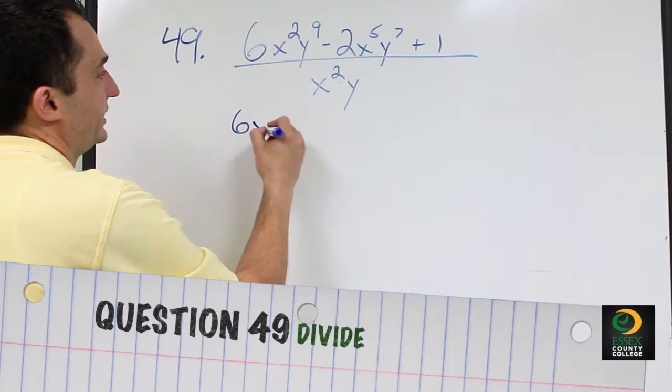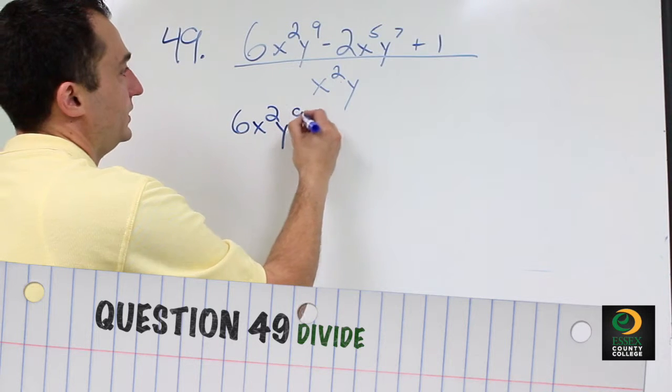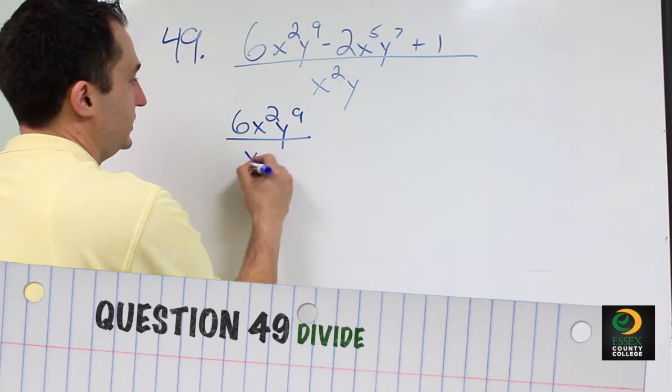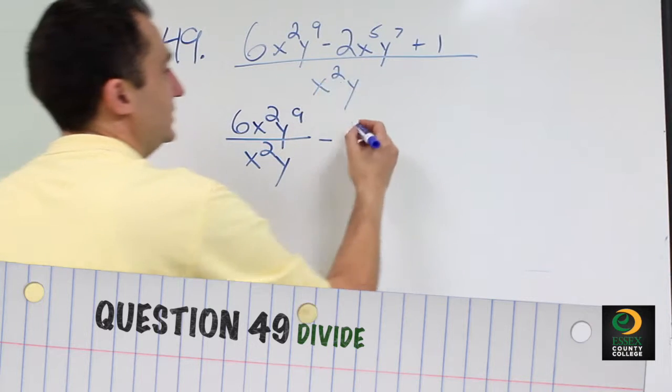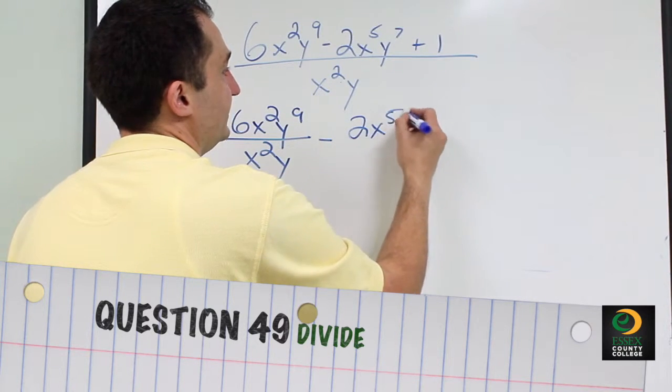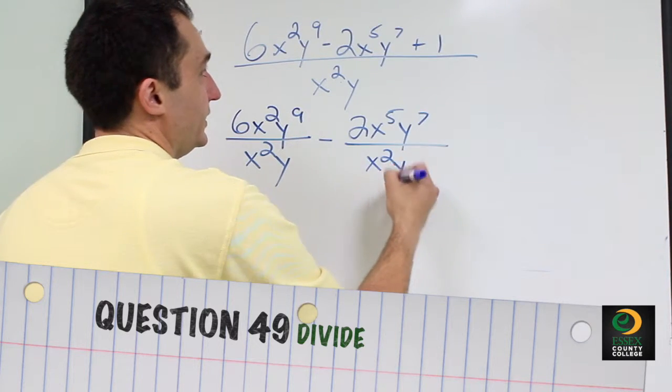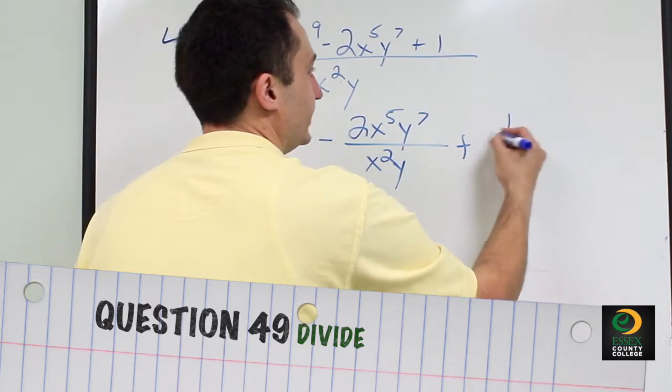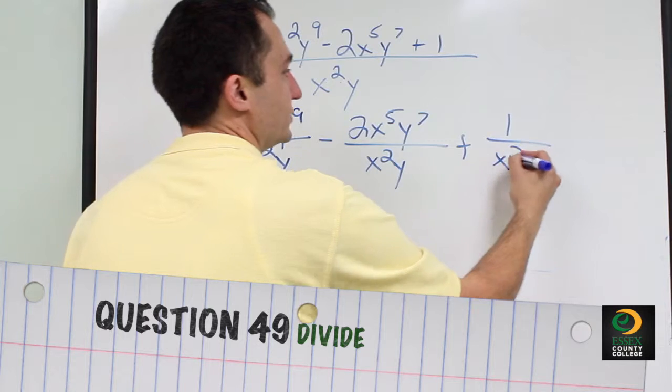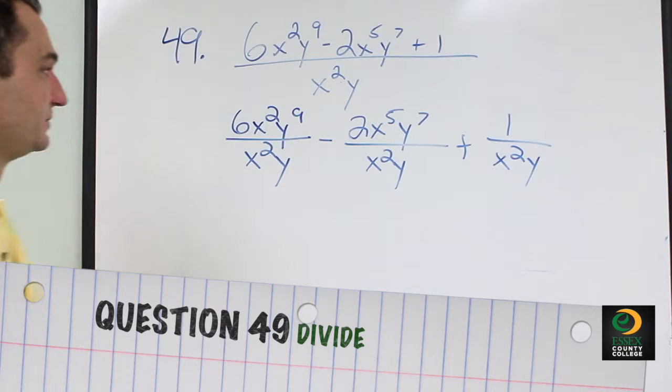We can do 6x squared y to the 9th over x squared y minus 2x to the 5th y to the 7th over x squared y, then plus 1 over x squared y. Now we just have to simplify.